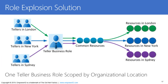EmpowerID has solved the role explosion problem through its unique design of its business role structure. In EmpowerID, the business role tier is the combination between a business role tree and an organizational location or organizational structure tree. A user never just has a business role assigned to them directly — they always have a business role assigned in conjunction with an organizational location or context. The organizational location tree can represent geographic structures, partner company structures, subcompany structures, business units, divisions, and cost centers. Users can be assigned business roles in any of these different contexts. In this simple example, you have one bank teller business role to which common access for bank tellers can be assigned.